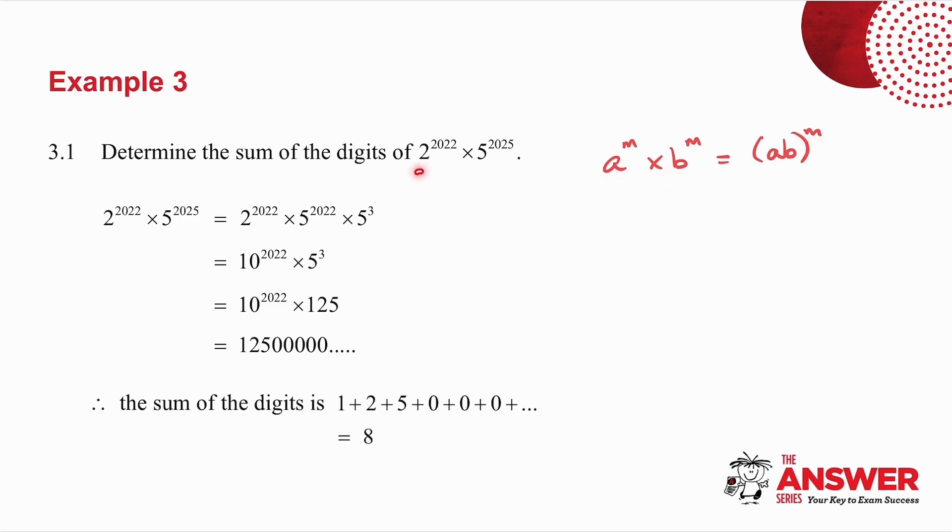If I've got the same power, I can multiply the bases and my power stays the same. If I look at the bases of 2 and 5, I know that 2 times 5 is 10. So I'm going to take 5^2025 and split it up. I'm going to break up the fives so that I've got 2022 of them and another 3 of them.